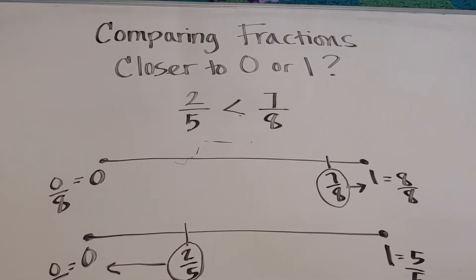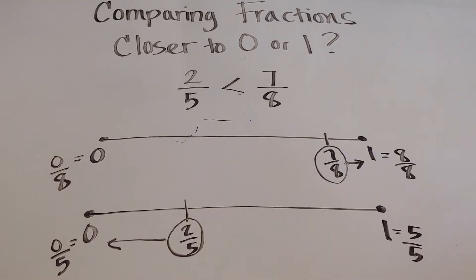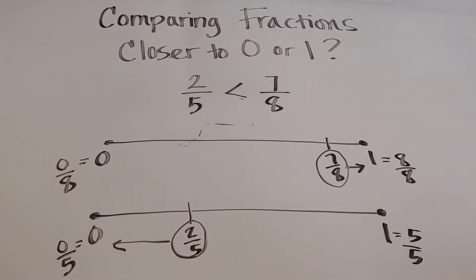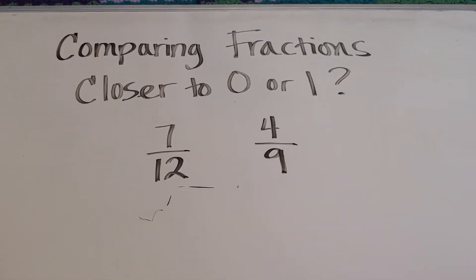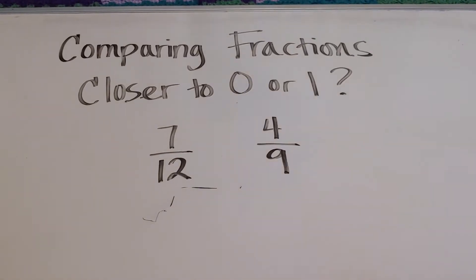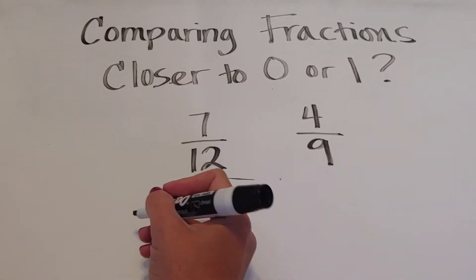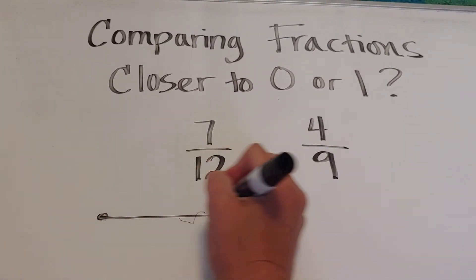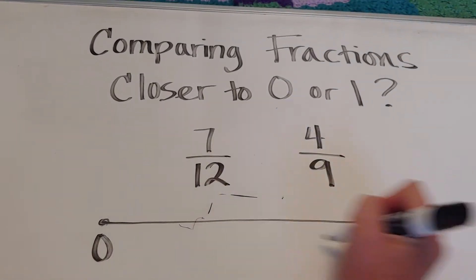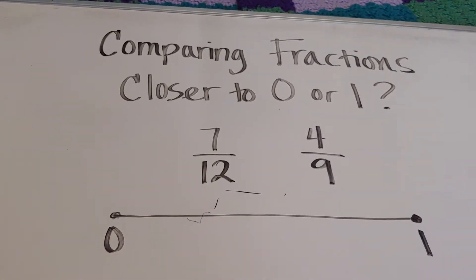Let's try another one from start to finish. In our next example, we're going to compare seven twelfths to four ninths using the closer to zero, closer to one method. The first one I'm going to draw, we'll do the twelfths. This would be zero twelfths.